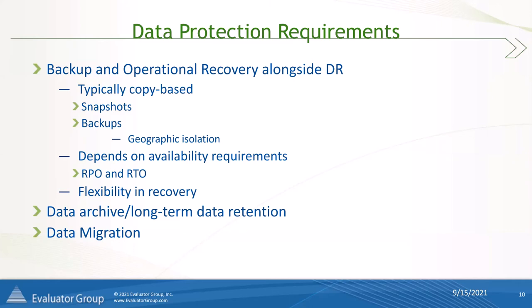Data copies including backup can be used for DR and operational recovery. A DR scenario is typically more of a crisis that is going to directly impact business uptime. Typically there might be a failure in the primary data center, and you will need to recover to an alternate site. In a DR scenario, there's a secondary site — whether in the cloud or a secondary data center maintained by the customer — that the recovery operation or failover can happen to.